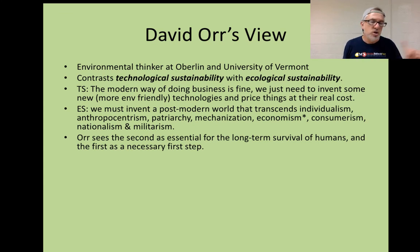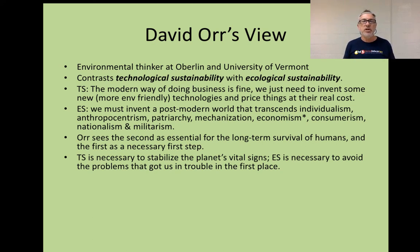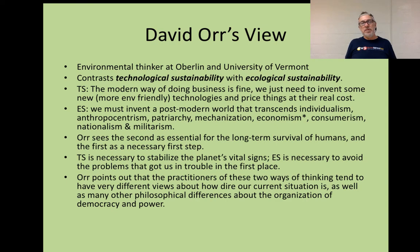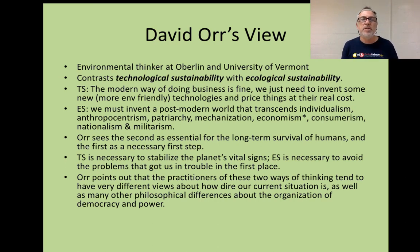Systems thinking will be a part of that evolution. Technological sustainability is necessary to stabilize the planet's vital signs, and ecological sustainability is necessary to save the patient and avoid the problems that got us in trouble in the first place. Orr points out that practitioners of these two ways of thinking tend to have very different views about how bad our current situation is, as well as fundamental philosophical differences about the organization of democracy and power.